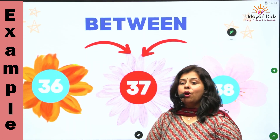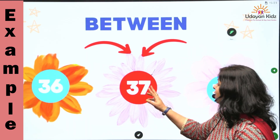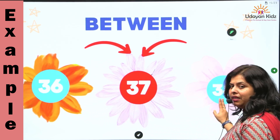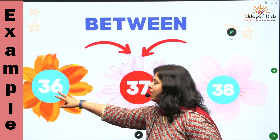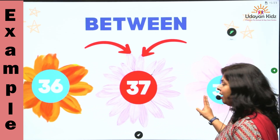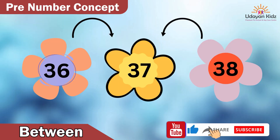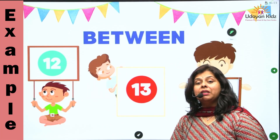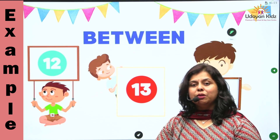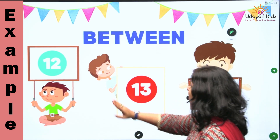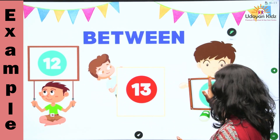Next, where does number 37 come? Number 37 comes between number 36 and number 38. Let's count: 36, 37, 38. Next, where does number 13 come? Number 13 comes between number 12 and number 14. Let's count again: 12, 13, 14.